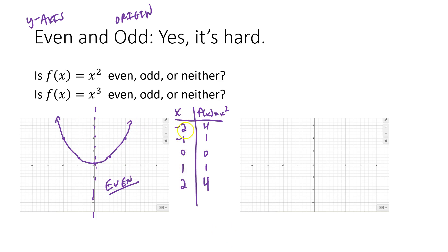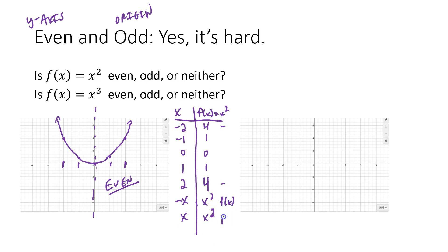When I plug in negative 2 and I plug in positive 2, what do you notice about the y-coordinates? Negative 2 and positive 2 give the same y-coordinate. Negative 1 and positive 1 — same deal, same y-coordinate. So the whole idea is if I plug in negative x and I plug in positive x, I get x squared no matter what I do. When I plug in x or negative x, either one gives me f(x).